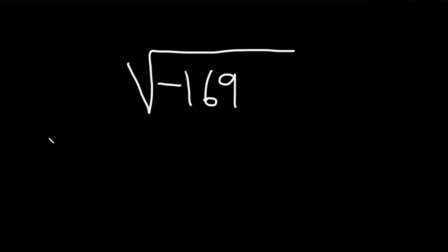In this problem, we're asked to simplify the square root of negative 169. So the first step in a problem like this is to deal with the minus sign inside the square root. We want to always first turn that into an i.